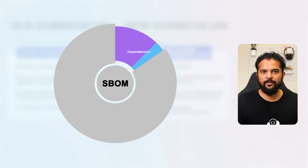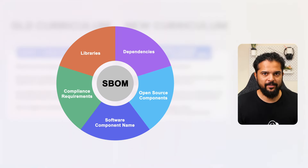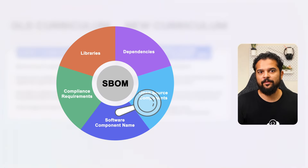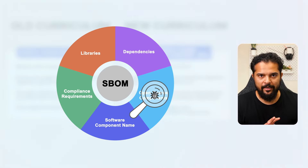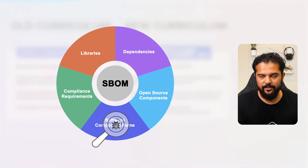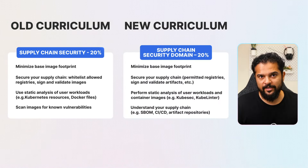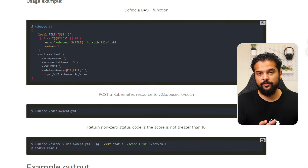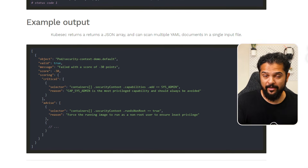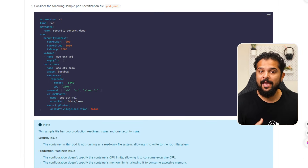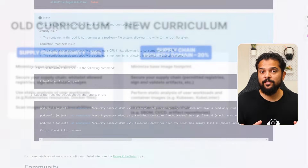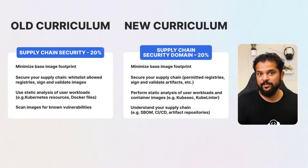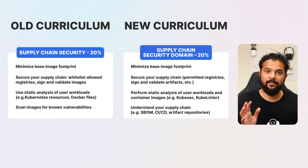One significant addition is the focus on understanding the supply chain, which includes the Software Bill of Materials (SBOM), CI/CD processes, and artifact repositories. An SBOM provides a detailed list of all components within a software product, including open-source libraries and dependencies, helping identify and address vulnerabilities in third-party components. Another important update is the use of specific static analysis tools such as kubesec and kube-linter. Kubesec evaluates Kubernetes resource configurations against security best practices, while kube-linter analyzes Kubernetes YAML files and Helm charts to identify potential security issues.